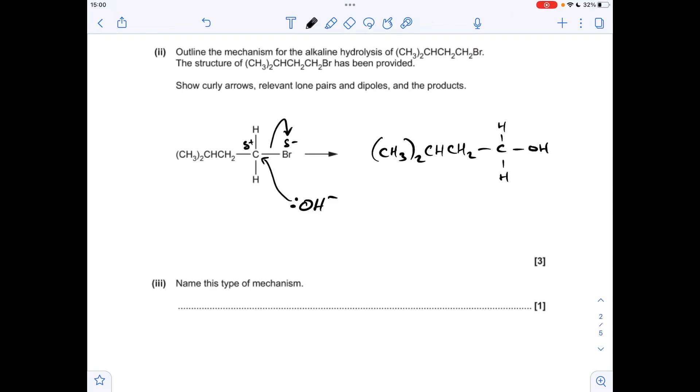So there's the organic product, and don't forget that bromine is going to come off as a bromide ion. Moving on, the name of the mechanism: the hydroxide ion's acting as a nucleophile, so it's donating a pair of electrons to the carbon, and essentially the hydroxyl group is going to replace the bromine. So it's nucleophilic substitution.